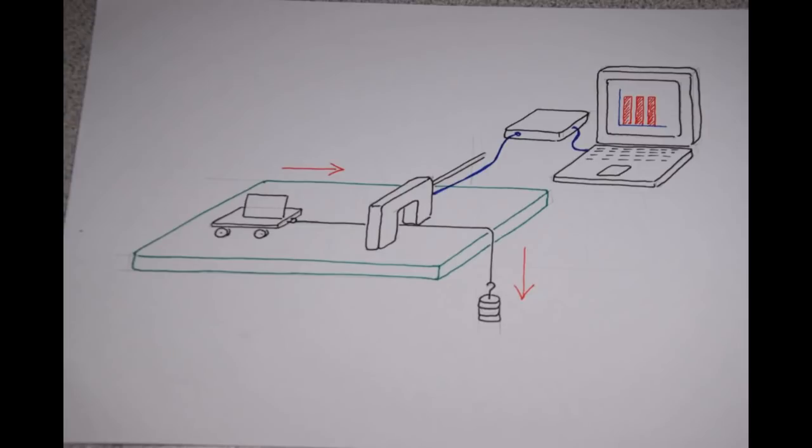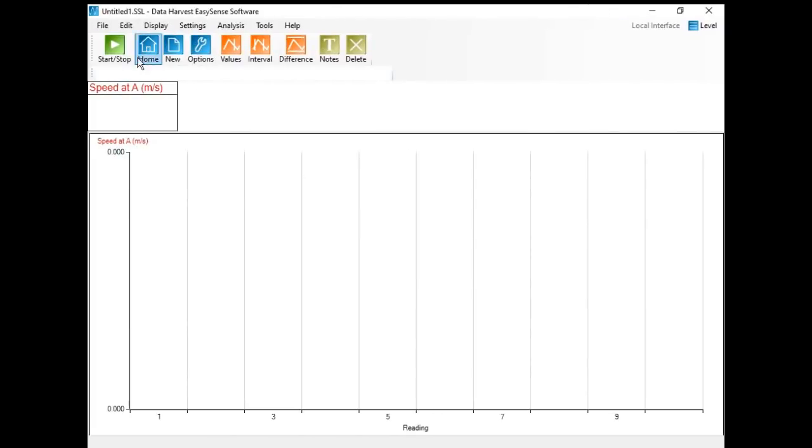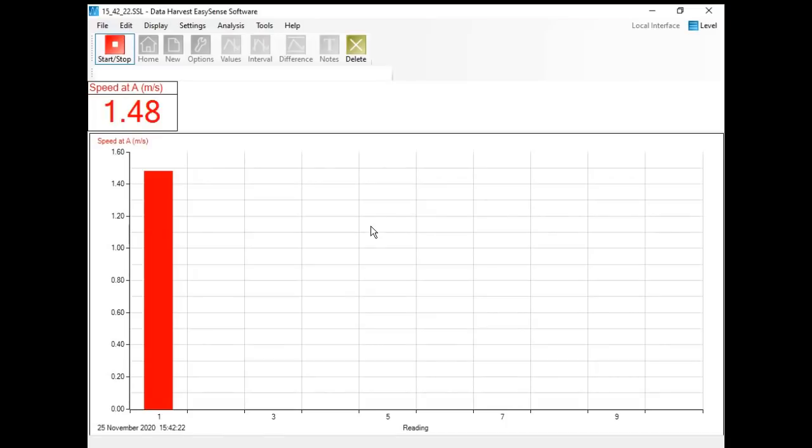This is a rough sketch of the apparatus being used. You'll see a trolley, light gate, the weights, interface, and computer. And now, a much speeded up set of results from which you can calculate an average.